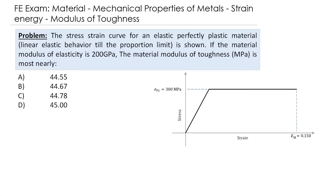Welcome back everybody. Today we will discuss a material science problem related to mechanical properties of metals — specifically the modulus of toughness. The problem is: the stress-strain curve for an elastic perfectly plastic material is shown. If the material modulus of elasticity is 200 gigapascal, the material modulus of toughness in megapascal is most nearly?